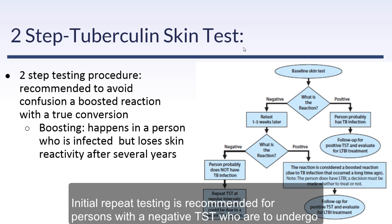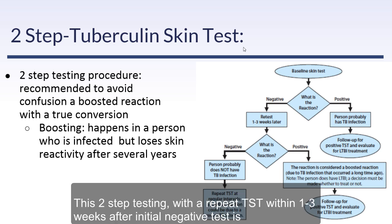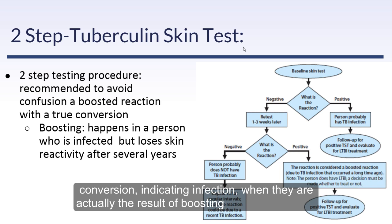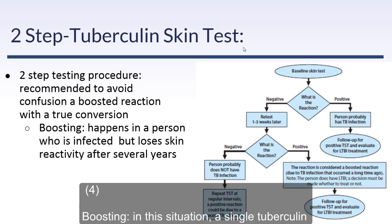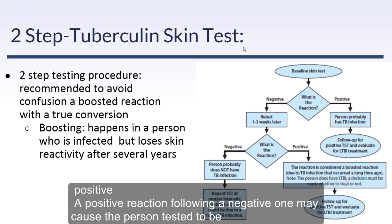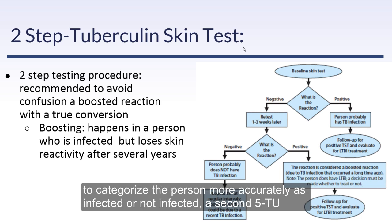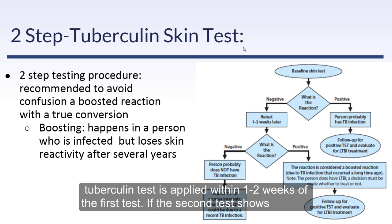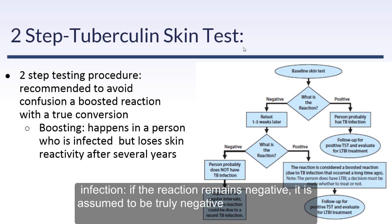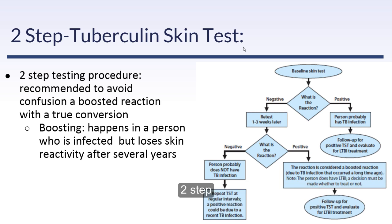The two-step PPD, which most of us get, is designed to avoid confusing a boosted reaction with an actual conversion. If the first TB test is positive, the patient is classified as having been exposed — probably a TB infection, pending other factors like BCG or NTM. If negative, retest one to three weeks later. If it stays negative, the patient probably doesn't have latent TB. If it becomes positive on the second test, it's considered a boosted reaction — capturing patients infected with TB many years ago who lost their ability to mount a response.